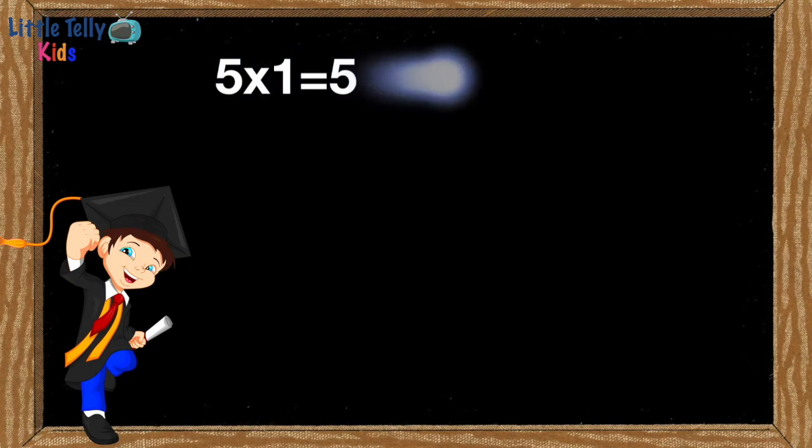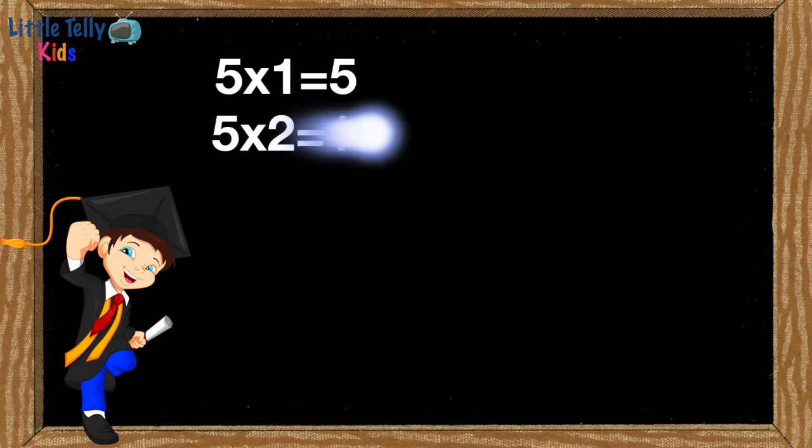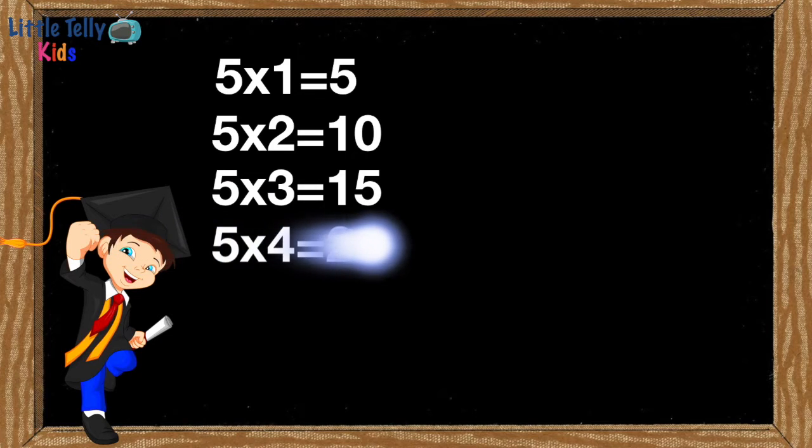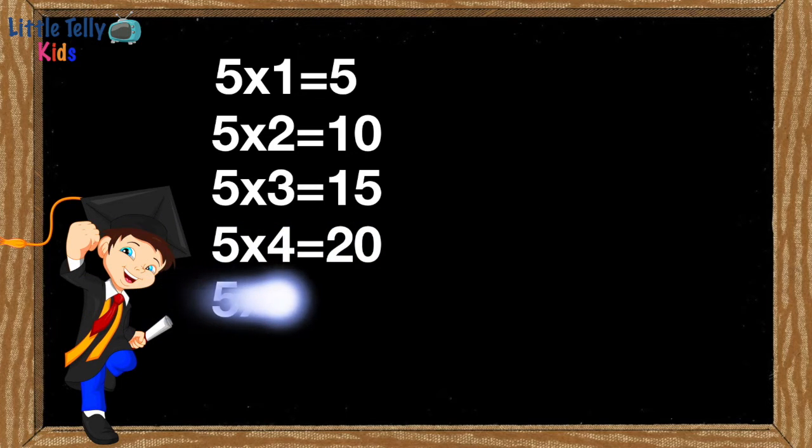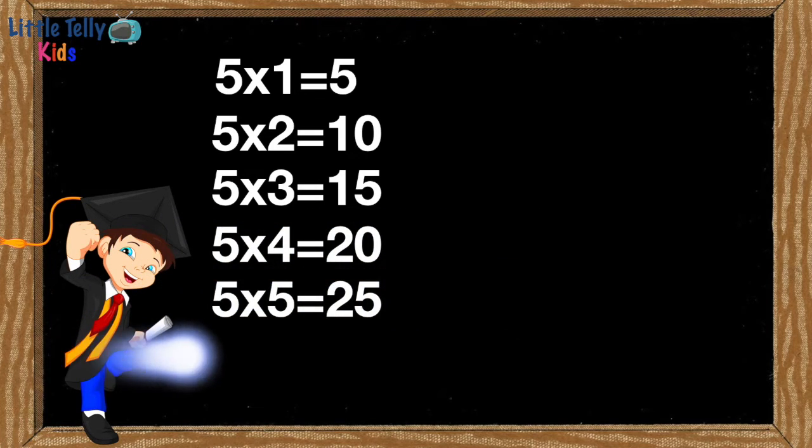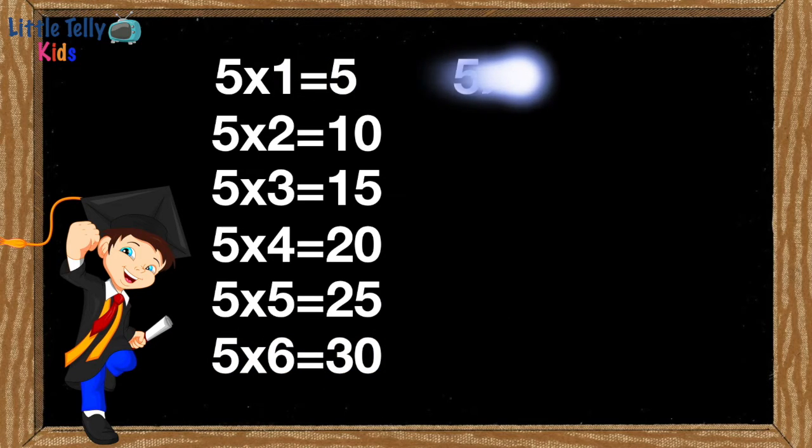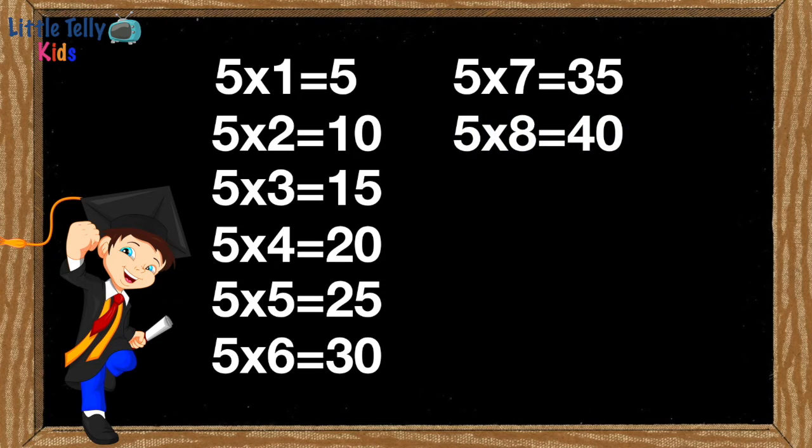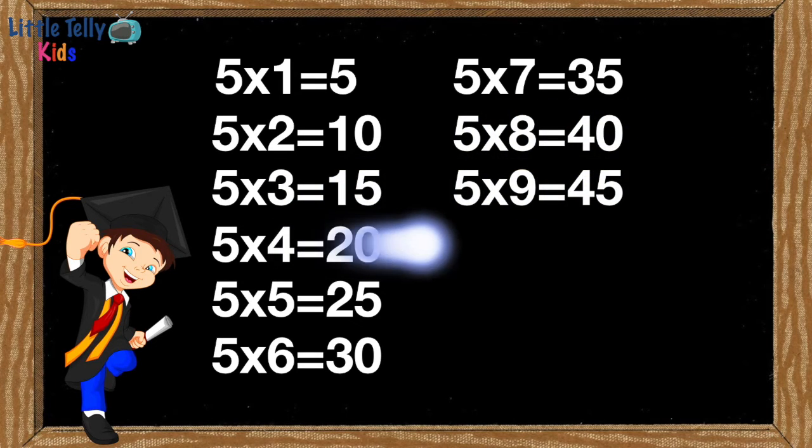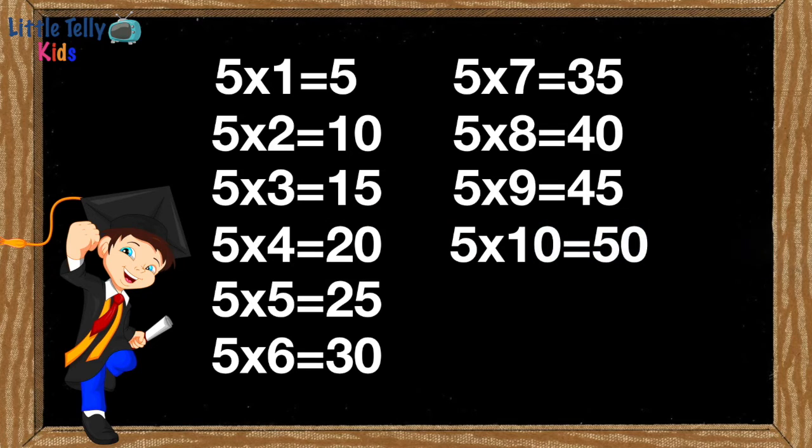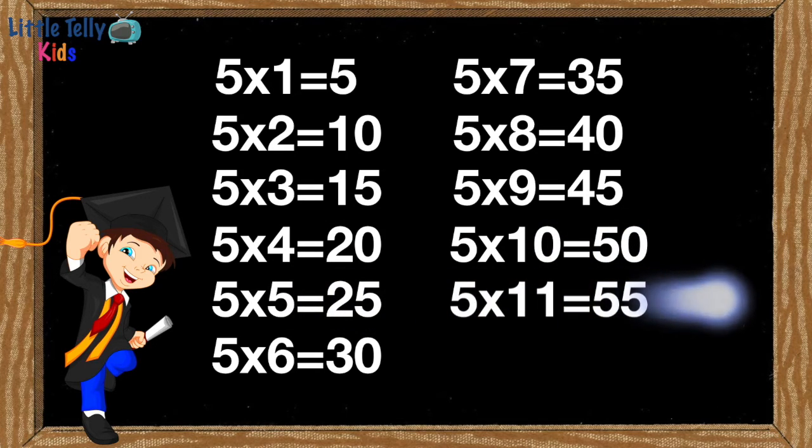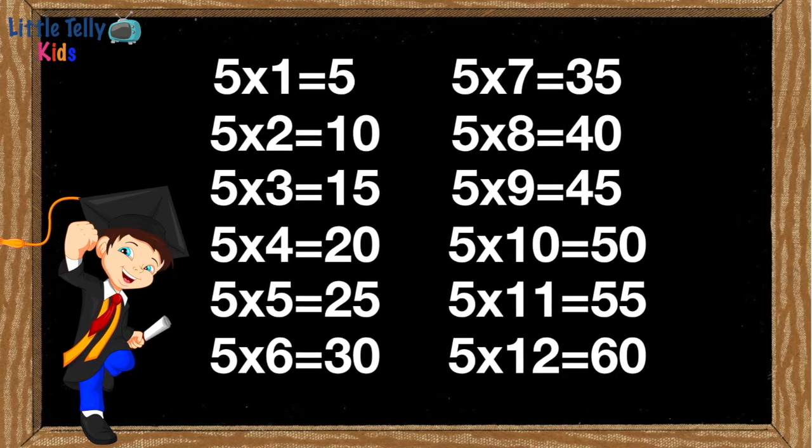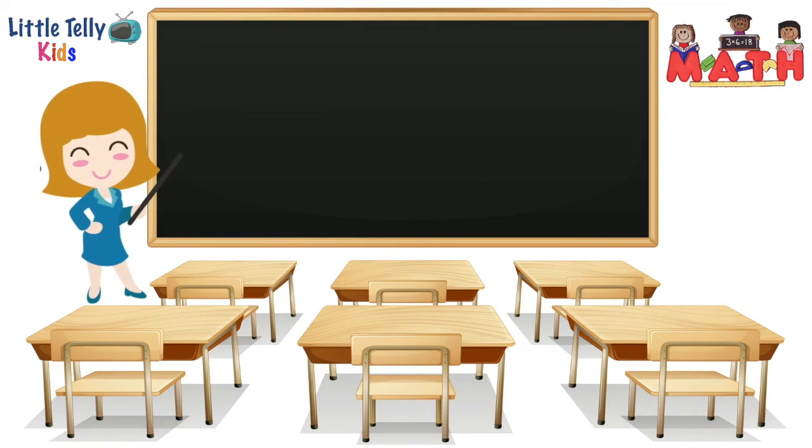5 1's are 5. 5 2's are 10. 5 3's are 15. 5 4's are 20. 5 5's are 25. 5 6's are 30. 5 7's are 35. 5 8's are 40. 5 9's are 45. 5 10's are 50. 5 11's are 55. 5 12's are 60.